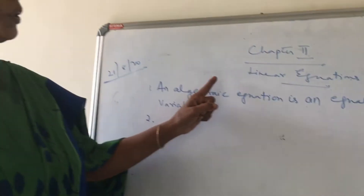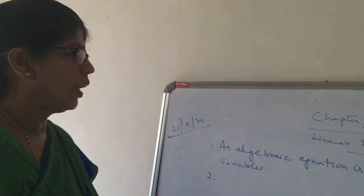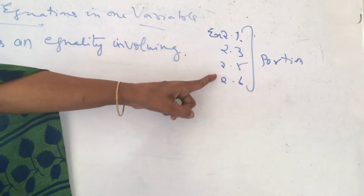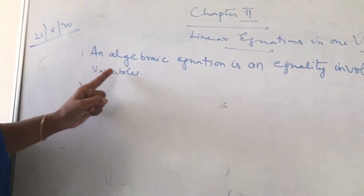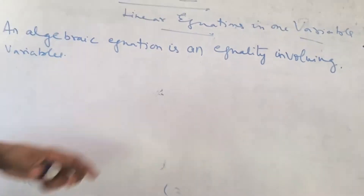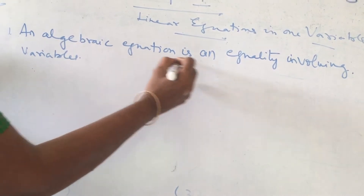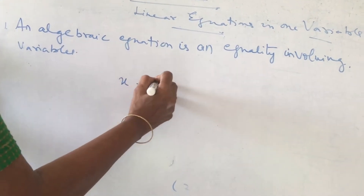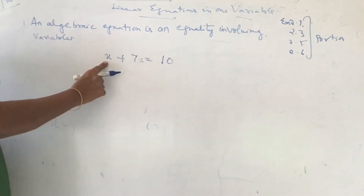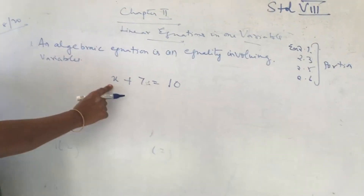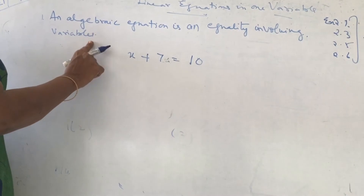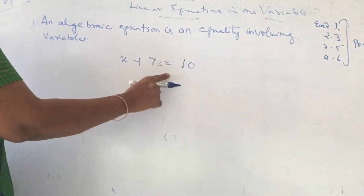Today's chapter is the revision for linear equations in one variable. In this particular chapter, we have these exercises for the portion: 2.1, 2.3, 2.5, and 2.6. What is an equation? An algebraic equation is an equality involving variables. Equality means equal to. What is the variable here? x. You are going to solve for x.